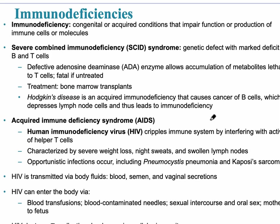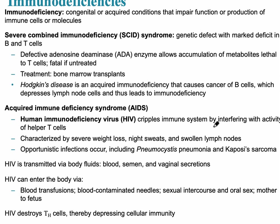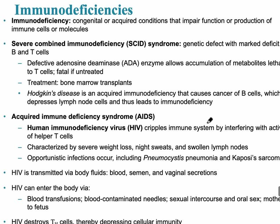An immunodeficiency could be a person having a weaker immune system — it doesn't necessarily have to be AIDS or HIV. An immunodeficiency is a congenital or acquired condition that impairs the function or production of immune cells or molecules. Severe combined immunodeficiency syndrome is a genetic example. Hodgkin's disease is an example of an acquired immunodeficiency that causes cancer of B-cells. The most commonly heard of is HIV.